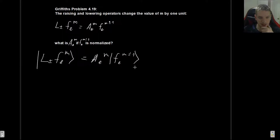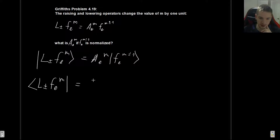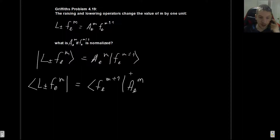Now let's take the bra of this equation. So the bra of L± |f, l, m⟩ is going to equal ⟨f, l, m±1| times A*_lm - the complex conjugate. Now, what can we do with this?